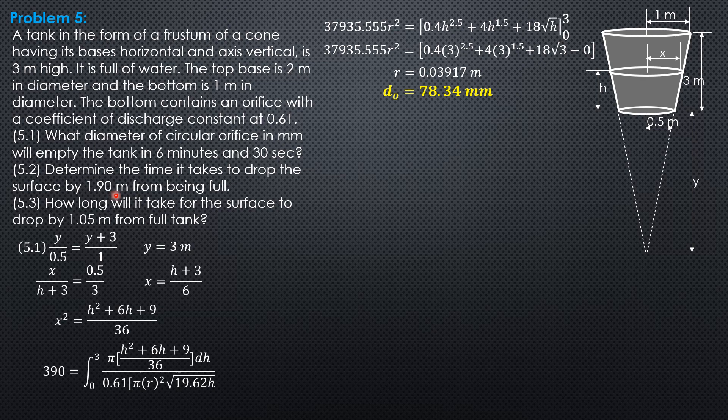And finally, how long will it take for the surface to drop by 1.05 meters from full tank? So 3 minus 1.05 is 1.95. So we use the same results except that the lower limit should be changed to 1.95. So time is 6.70056, 0.4 times 3 to that. So this is the result of the integral, then limits from 1.95 to 3. So 6.70056, 0.4 times 3 to the 2.5 plus 4 times 3 to the 1.5 plus 18 square root of 3 minus 6.70056 times 0.4 times 1.95 to the 2.5 plus 4 times 1.95 to the 1.5 plus 18 square root of 1.95.